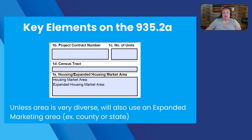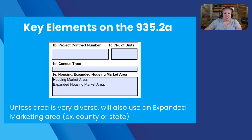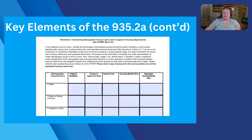Some key elements to watch: unless your area is very diverse, you are very likely going to be using the expanded housing market area, which is typically a county or a state. Make sure you're filling out the project number, unit number, census tract, and housing marketing area. You're going to list demographic information — it will ask for your residents, applicants, and census tract. If you're using an expanded area, it will ask for that expanded data as well, expressed as percentages.